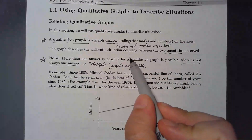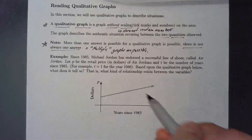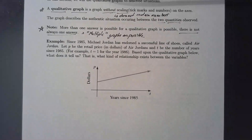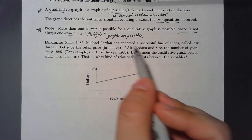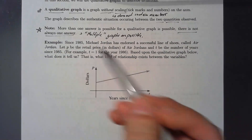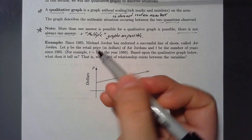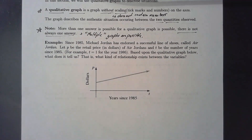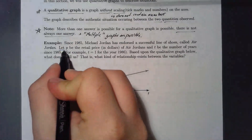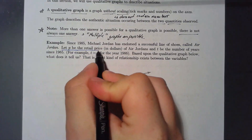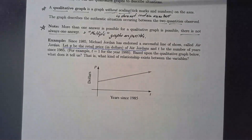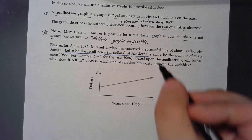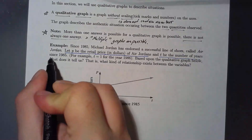To illustrate, this example describes a relationship. Since the year 1985, Michael Jordan has endorsed a successful line of shoes called Air Jordans. We're going to let P be the retail price in dollars of Air Jordans, and we're going to let T be the number of years since the year 1985.